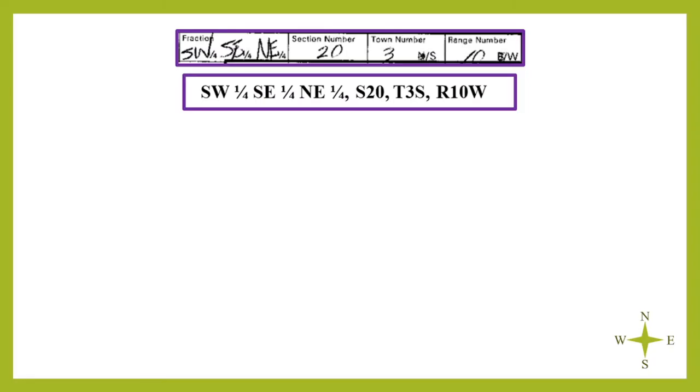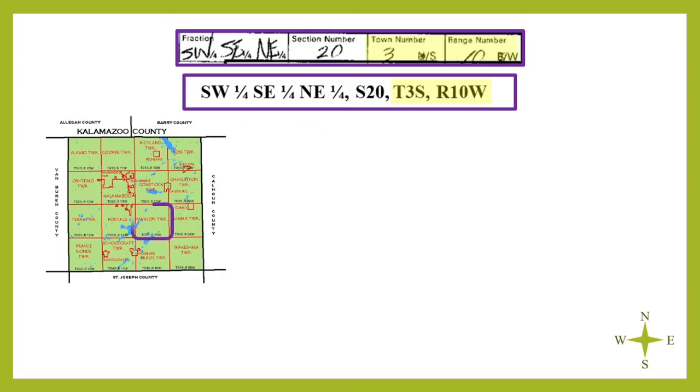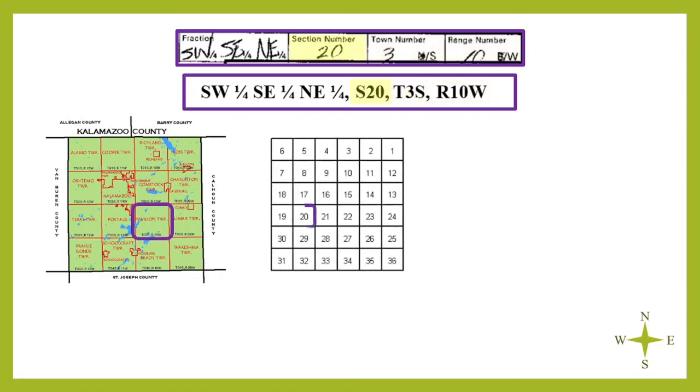Given the full written PLSS notation for this area, the described location can be found. As identified earlier, Township 3 south and range 10 west is Pavilion Township of Kalamazoo County. The record shows the well is located in section 20 of Pavilion Township, which is further subdivided by quarter.